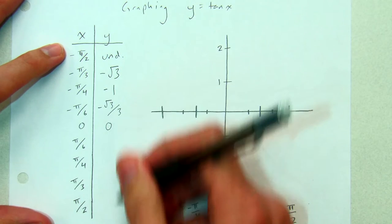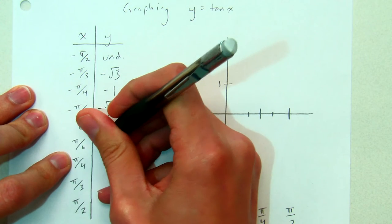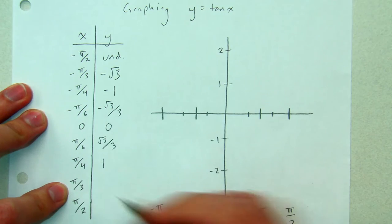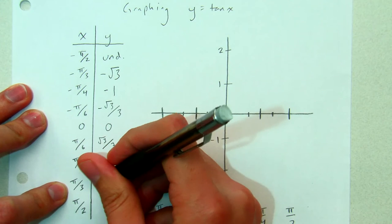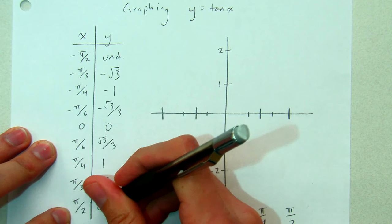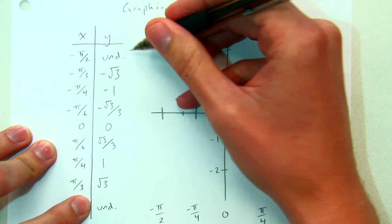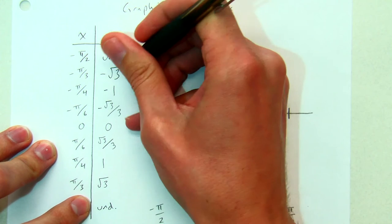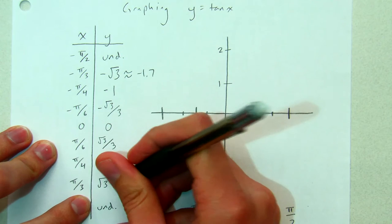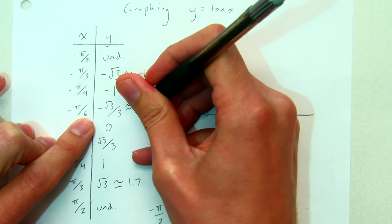If we continue, we get a lot of the same looking numbers, but they'll be positive now. So we get root 3 over 3. Tangent of pi over 4 is positive 1. Tangent of pi over 3 is root 3. And tangent of pi over 2, just like tangent of negative pi over 2, is undefined. It'll help to know that root 3 is about 1.7 and root 3 over 3 is about 0.6.